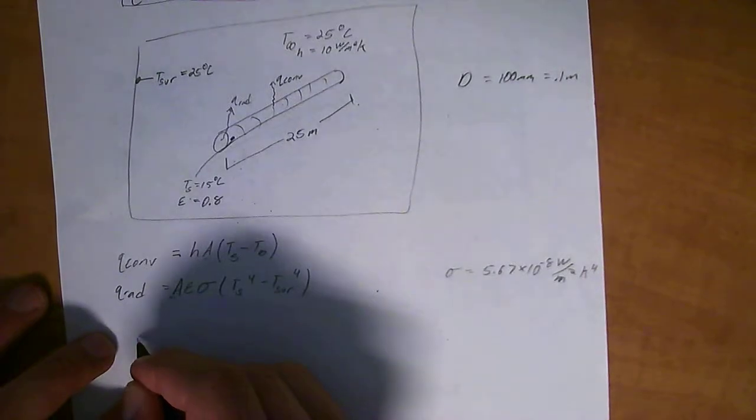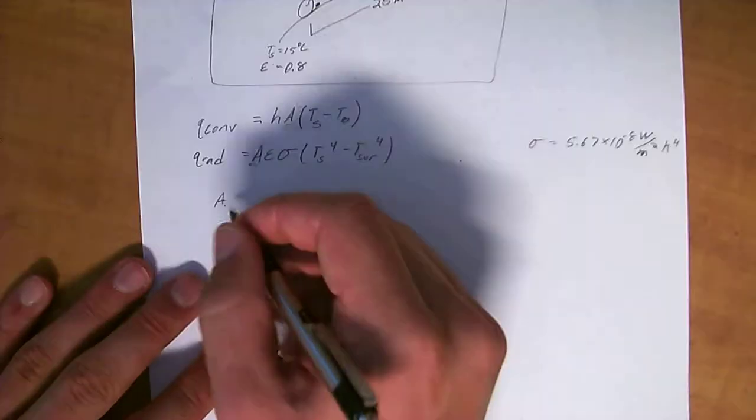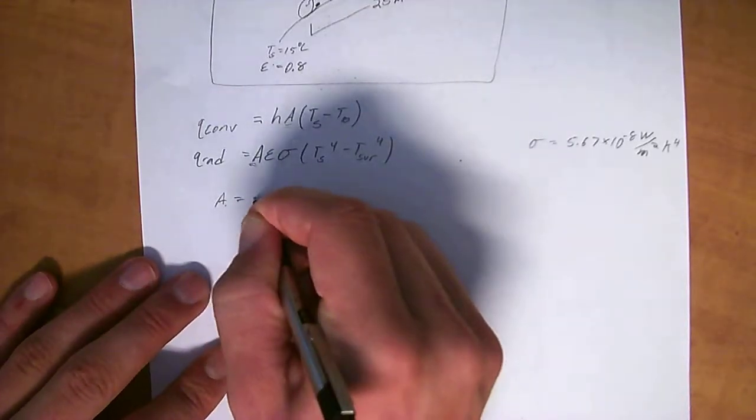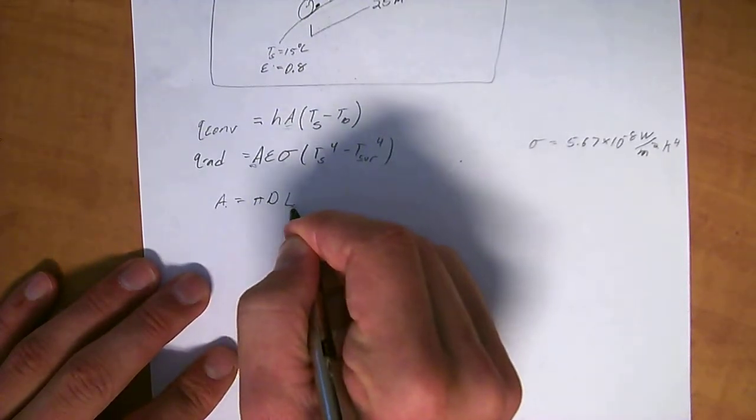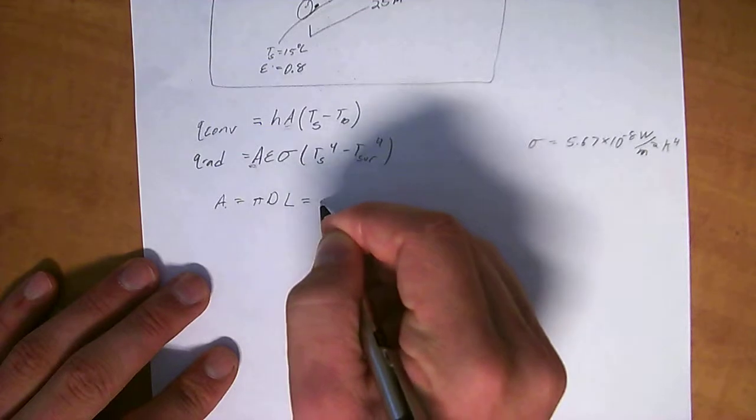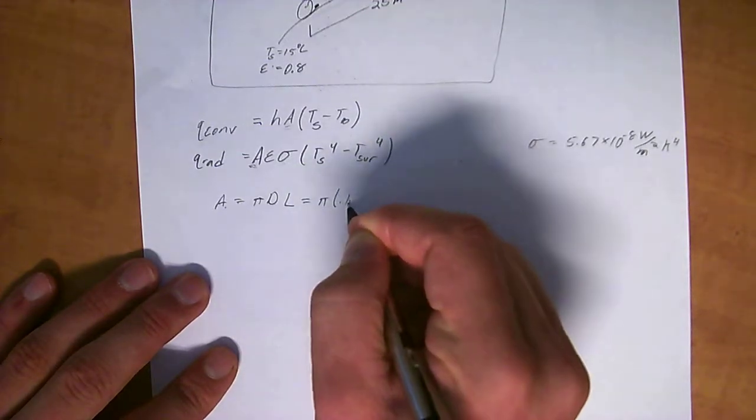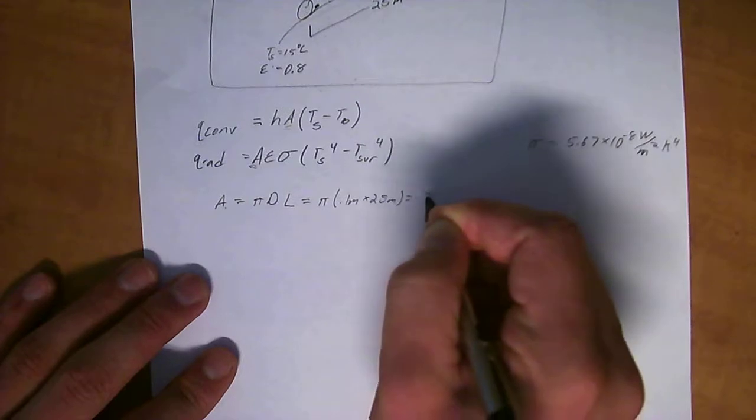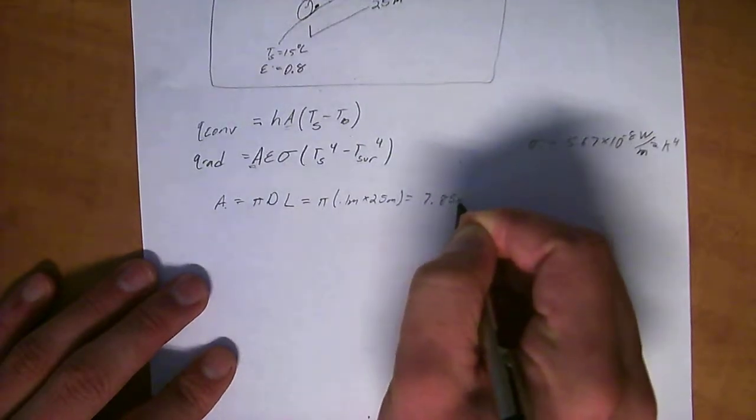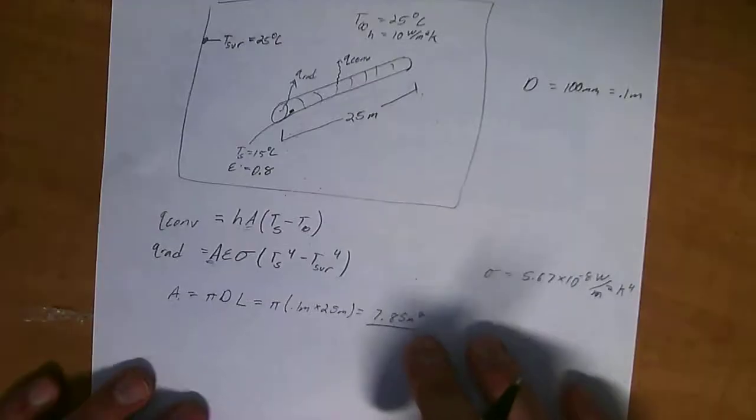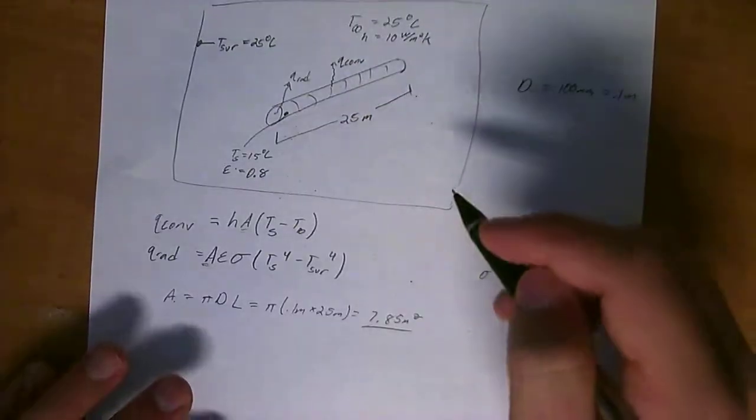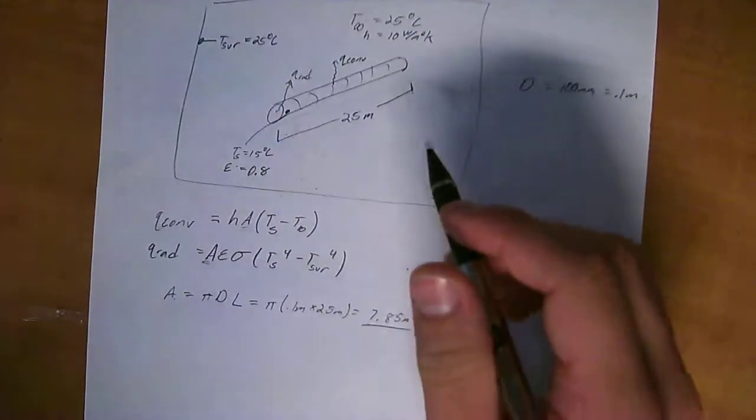So, that's going to, A is going to equal pi D times the length, which is equal to pi of 0.1 meters times 25 meters, which is equal to 7.85 meters squared, which is the area from which heat is radiating and interacting with the environment to create convection.